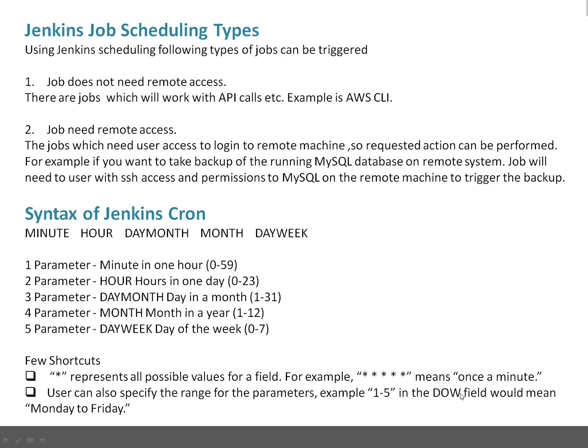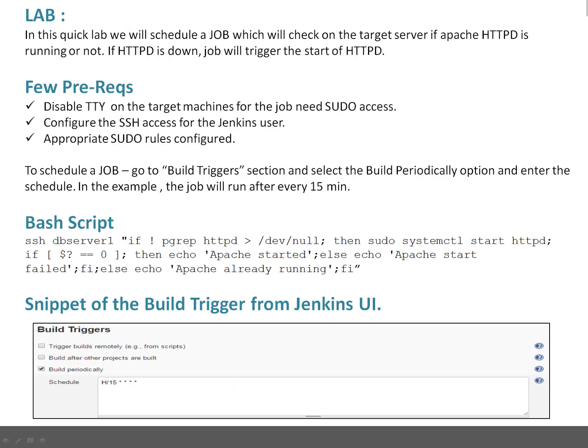In today's lab, we are going to schedule a job that will check whether Apache is running on a target server. If the service is down, Jenkins will start the service. Jenkins user will need remote login access on the target machine. A few prerequisites: disable TTY on the target machines for jobs that need sudo access, because the Jenkins user needs sudo access to start httpd on the remote machine.